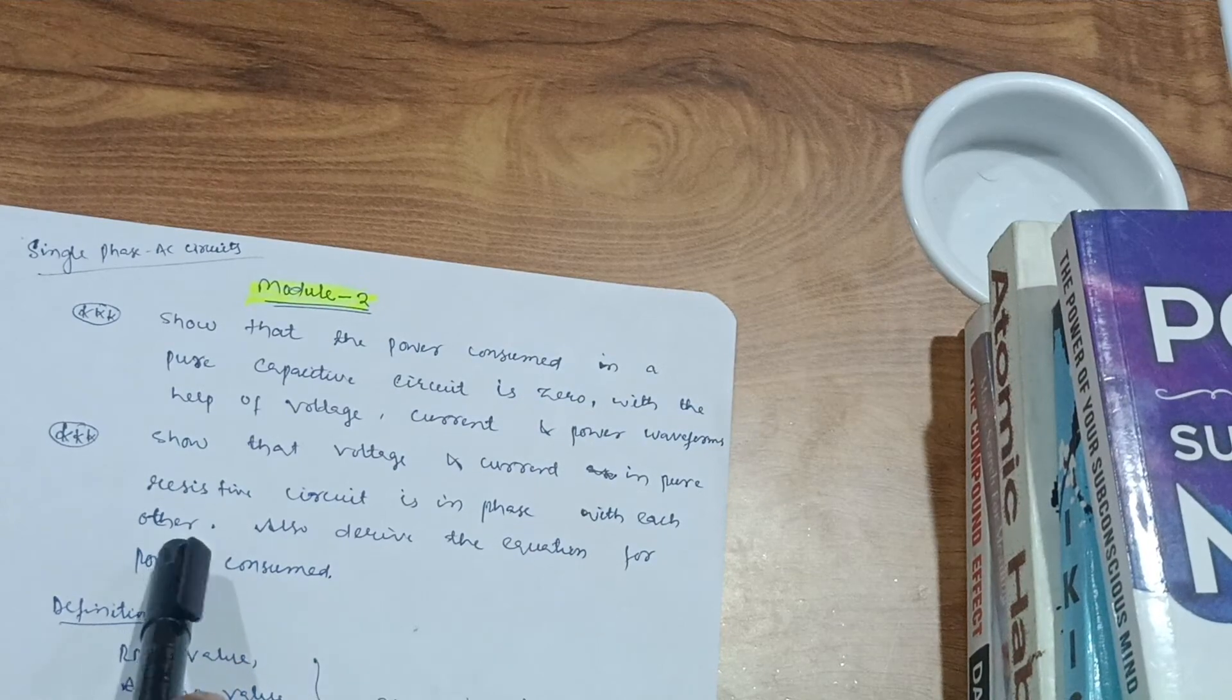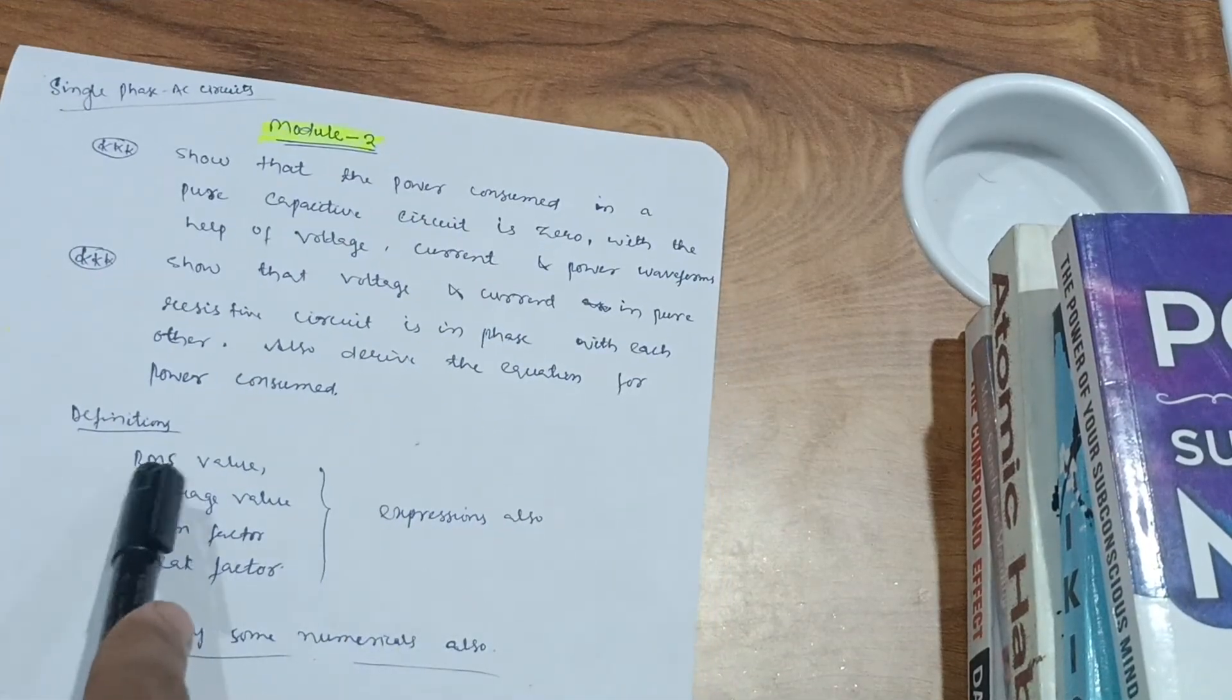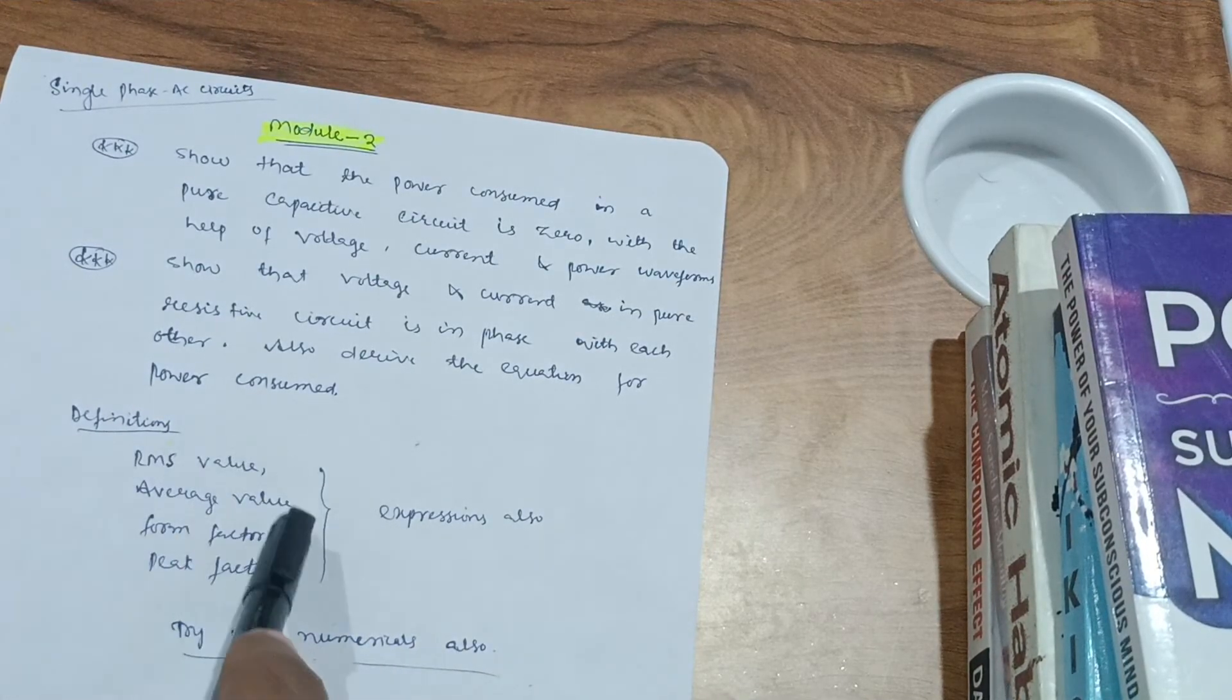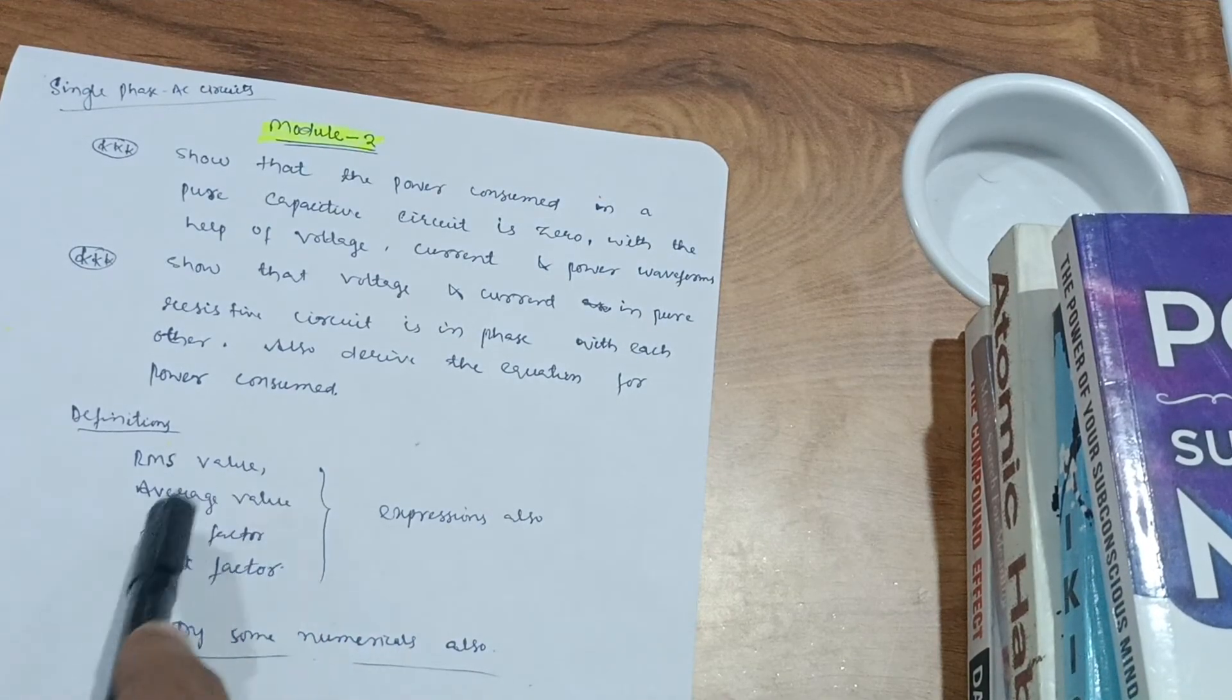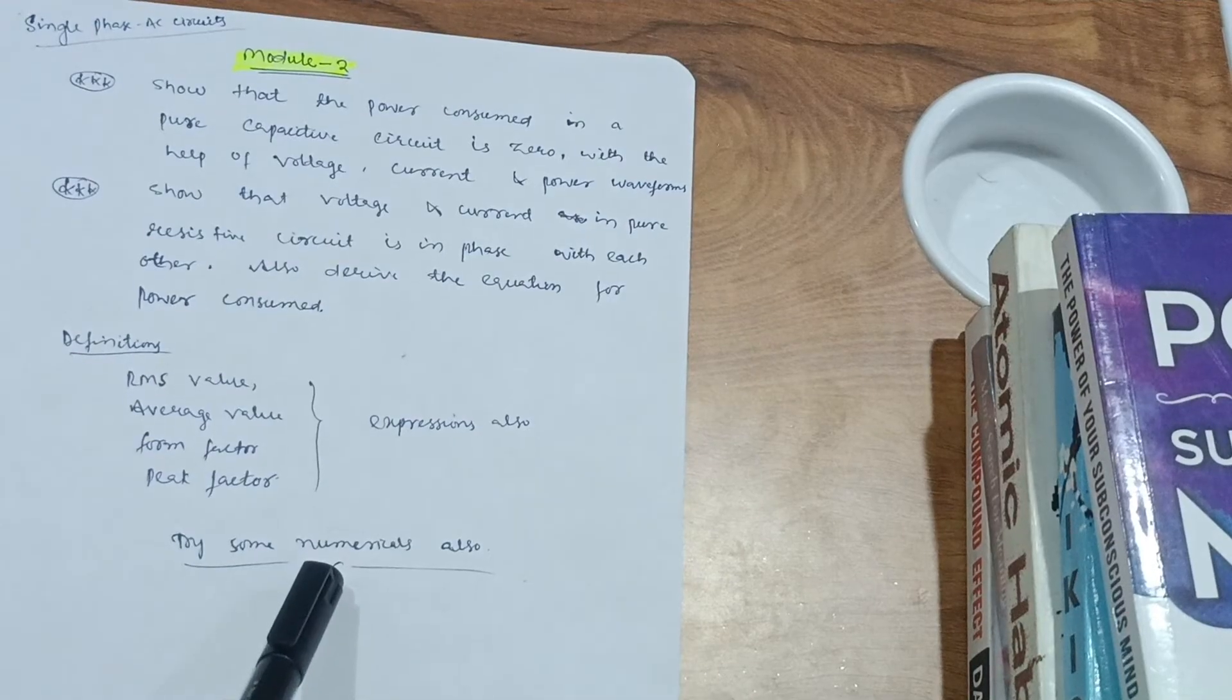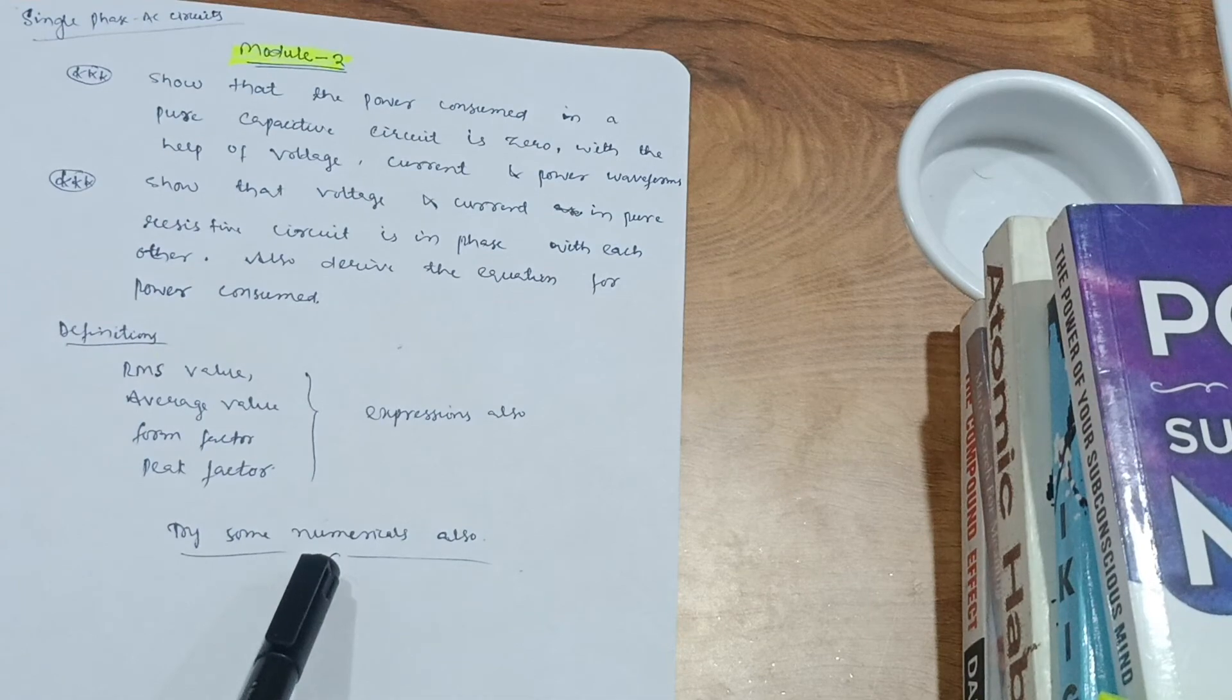These are the two derivations which are the most important ones. It will definitely carry seven marks. Then some definitions are there you have to go through, like RMS value, average value, form factor, peak factor, and also expressions also for these particular values. That is, RMS value write down expression, average value, form factor write down its expression also, peak factor like that. And try some numericals also in this particular subject.